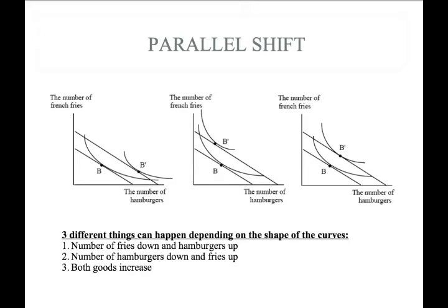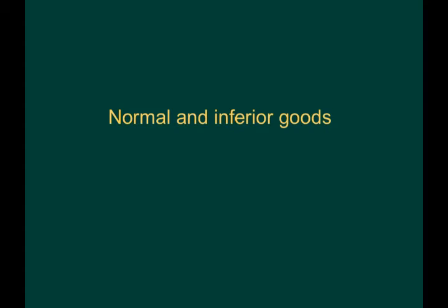In the third example, we see that both hamburgers and french fries have increased to the point where we move out to B prime. So we could get three different potential things happening here. This leads us to an understanding of normal goods and inferior goods. With a parallel shift, you can easily identify these.